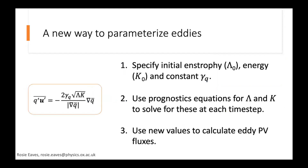We implement it by specifying an initial enstrophy and initial energy distribution and a constant value for the efficiency parameter. Following a method similar to Eden and Greatbatch (2008), we use prognostic equations to step forward the enstrophy and kinetic energy at each time step, and use those new values to calculate the eddy potential vorticity fluxes. We hope this will constrain the flow.